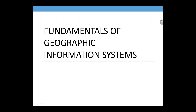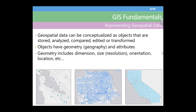So, fundamentals of GIS. This is probably the most basic we'll talk about today, and I'm sure some of you are familiar with a lot of this. Geospatial data can be conceptualized as objects that are stored, analyzed, edited or transformed. These objects have two important features: they have geometry and they have attributes. Geometry is essentially: is it a point? Is it a polygon? Is it a line? Where is it? How is it oriented? How large is it? What is the resolution of that information? At the bottom here we have some examples — stations around the Bay Area are examples of point data, a street in San Francisco is line data, and polygons can store information about, say, your county.